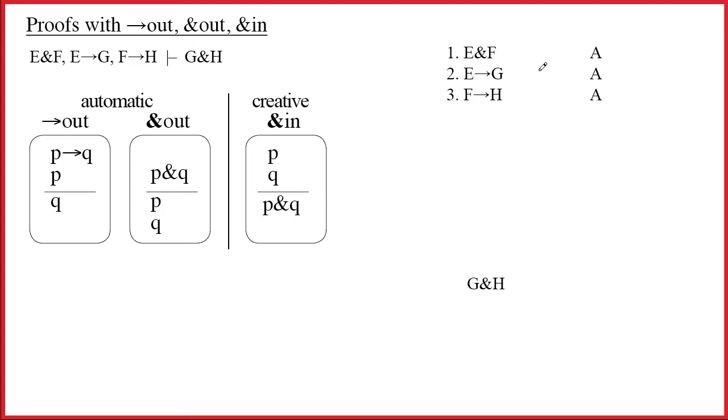Okay, so we've got the proof set up. The argument had one, two, three premises and a conclusion, one, two, three premises and the conclusion set up at the bottom, justification column, every premise is an assumption.